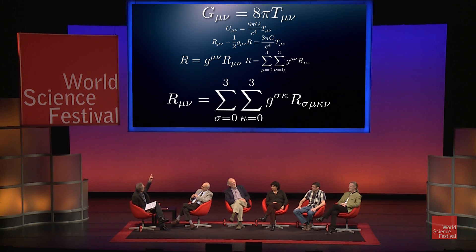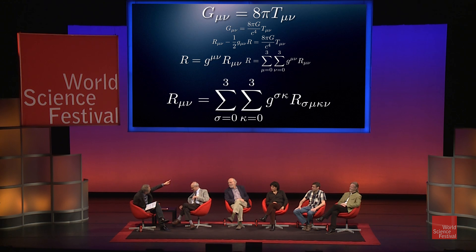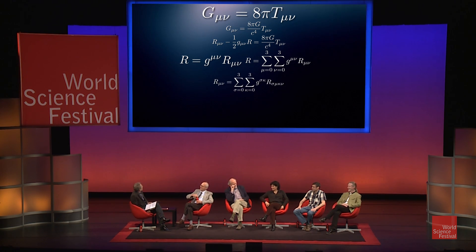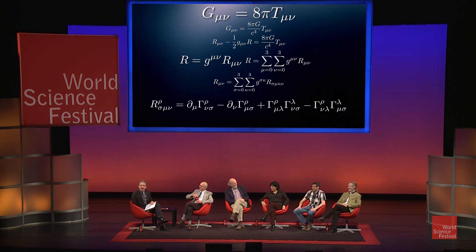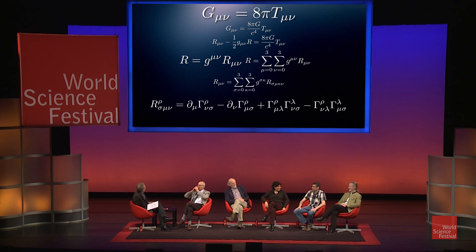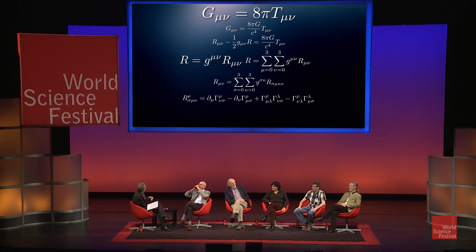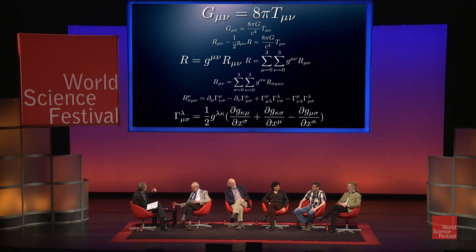If you go a little bit further and ask yourself what is the first term, R-mu-nu — that's the Ricci tensor, and it's given by this combination of terms. But what's that new object on the right-hand side? That's the Riemann curvature tensor. What is that equal to? Well, that's equal to this combination, where those gammas are known as the Christoffel symbols. And then what are they equal to? They're equal to a particular combination of the metric together with various derivatives of it. It's all just to tell you that this is kind of complicated.